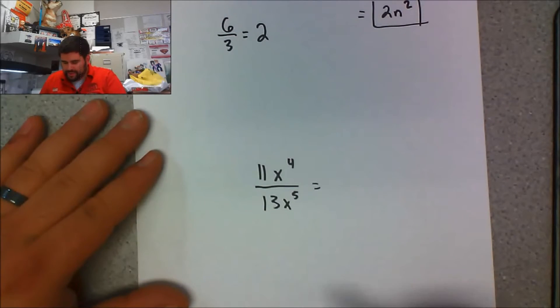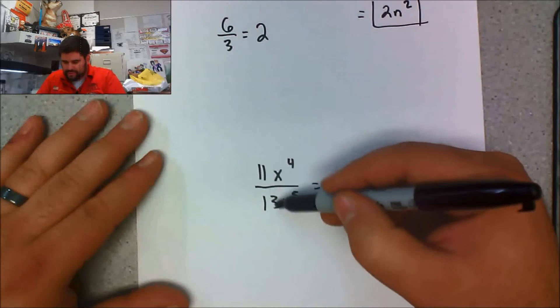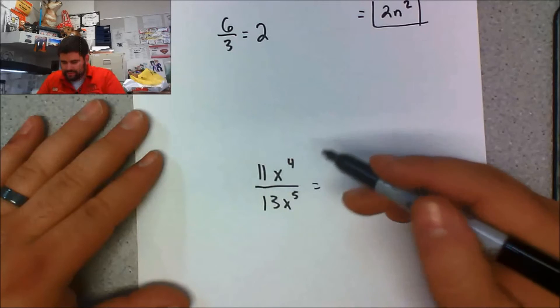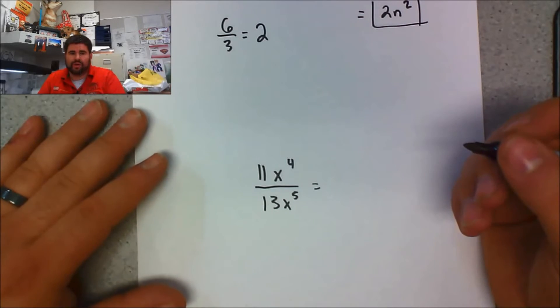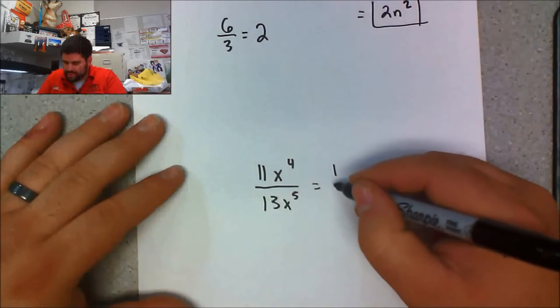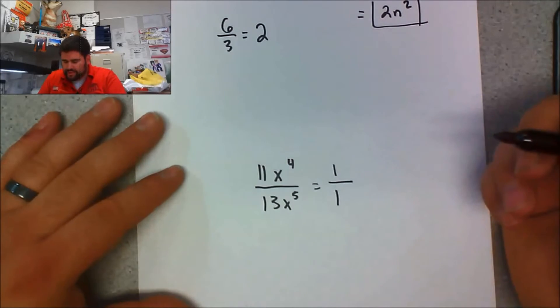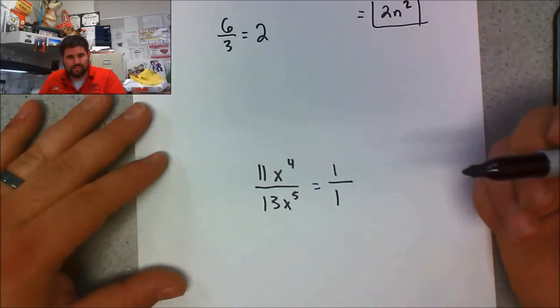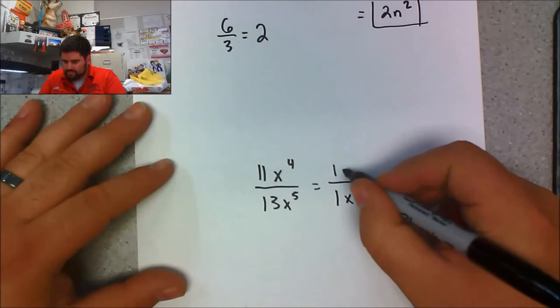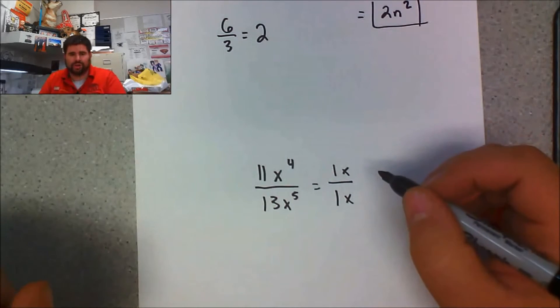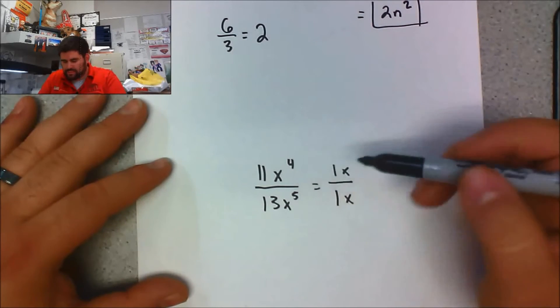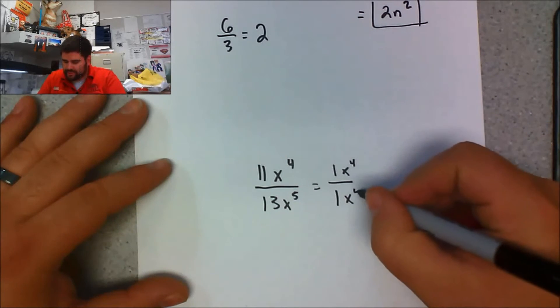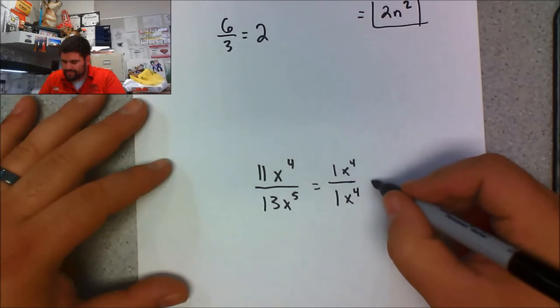Again, I'm going to start by finding the GCF. I need the greatest common factor between 13 and 11. To be honest, 11 and 13 are both prime numbers, so the only factor they share is 1. Now I'm looking at the variables. They share x, but how many x's do they share? In this case, they share 4—they share 4 x's together.